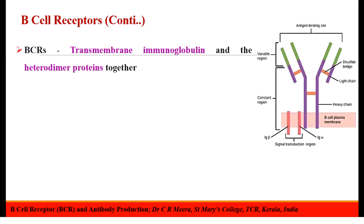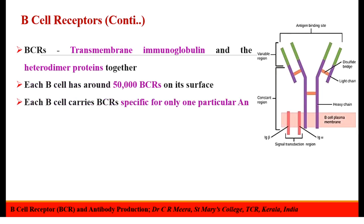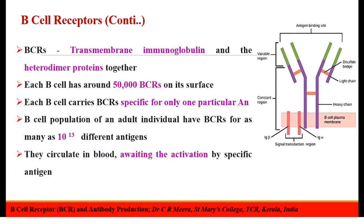The transmembrane immunoglobulin and the heterodimer proteins together make up the so-called BCRs. Each individual B-cell has around 50,000 BCRs on its surface. But one B-cell carries BCRs specific for only one particular antigen. Thus, the B-cell population of an adult individual carries BCRs for as many as 10^13 different antigens, meaning 10^13 different and undifferentiated B-cells are present in an adult human body. They circulate in the blood awaiting activation by specific antigen.